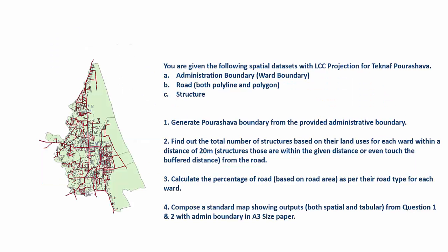The problem we have is this: I have an administration boundary, a layer of roads, and also a layer of structures. In the road layer we have both polyline and polygon — the polyline is only where the road lines exist, and the polygon shape also includes the width of the road. First, we have to generate ward boundaries from the provided administrative boundary — in short, merging all small divisions into a single unit. Then I have to find out the total number of structures based on their land uses for each ward within a distance of 20 meters from the road.